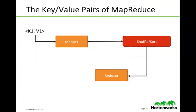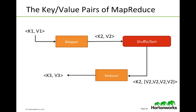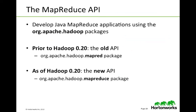For the key-value pairs of MapReduce: key one and value one come into the mapper. The mapper then produces key two and value two, which is sent to the shuffle sort. At that point you have the key with all the various values of that key two value two. The reducer then produces the final key — key three with value three. There's a very simple version of this in Apache Hadoop: the word count application. You can run that on core Hadoop with MapReduce and see how this output is done.